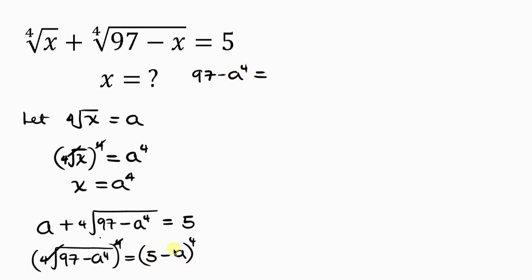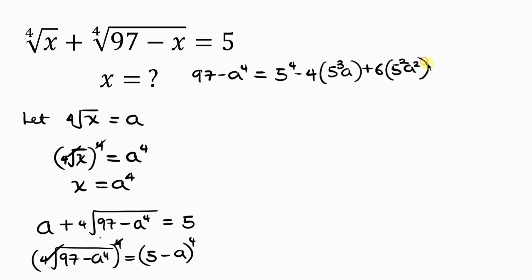On the right-hand side, we apply binomial expansion to (5 minus a)⁴, giving: 5⁴ minus 4 times 5³ times a, plus 6 times 5² times a², minus 4 times 5 times a³, plus a⁴.